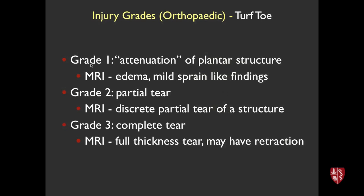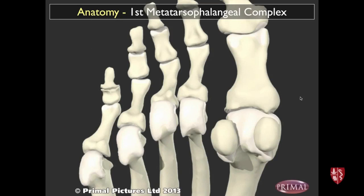The clinical grading system has three grades: Grade 1 is attenuation of plantar structures — a mild degree of injury; Grade 2 involves partial tearing of some structures but not a complete tear. On MRI, Grade 1 shows a little edema with nothing discretely torn, Grade 2 shows something discretely partially torn but not all the way through, and Grade 3 is a full-thickness tear. With a full-thickness tear structures may retract, so the orthopedist may perform exam under fluoroscopy to assess sesamoid tracking and coupling at the first MTP.